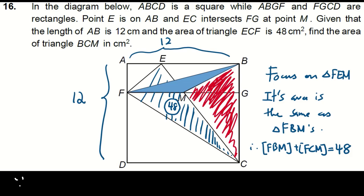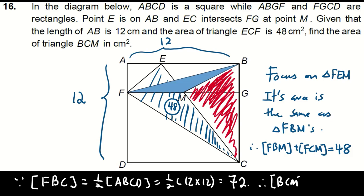Clearly, the area of triangle FBC is half of the area of square ABCD. Hence, the area of FBC is 72. Finally, the area of BCM is 72 minus 48 making the answer 24.